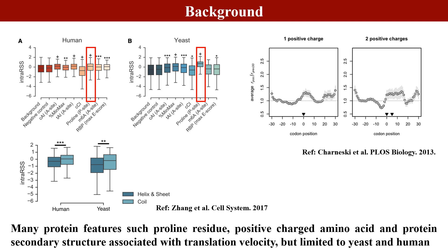In addition to the mRNA sequence features, many protein features such as proline residue, positively charged amino acids, and protein secondary structure are also associated with translation velocity, but these findings were limited to yeast and human.